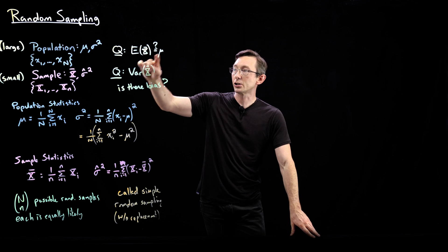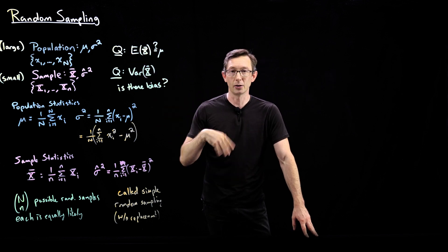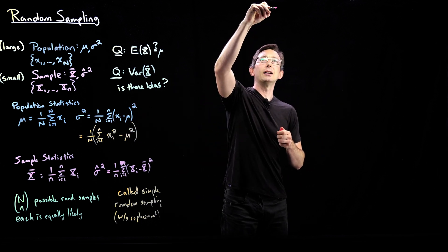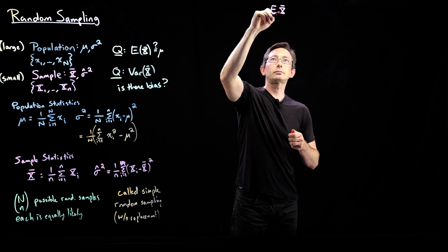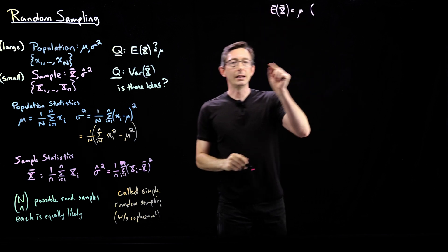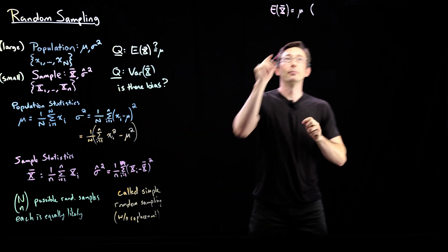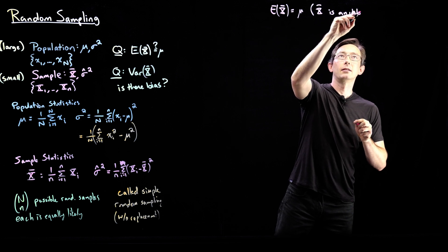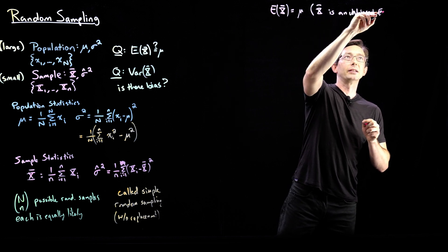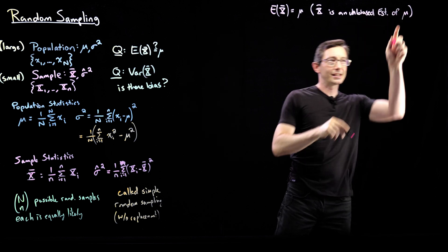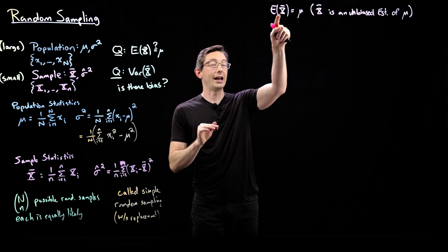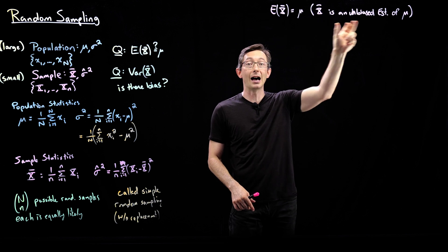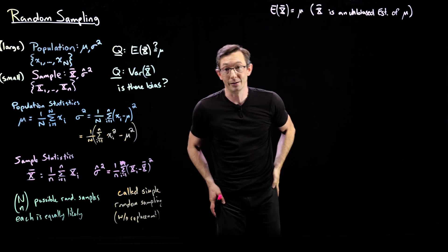We're going to start with the expectation value, because that's always easier to work with than the variance — the formula is simpler. We want to show that the expectation value of X-bar equals mu, meaning that X-bar is an unbiased estimate of mu. In statistics language, 'unbiased' means the expectation value of X-bar equals mu with no constant error.